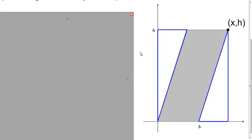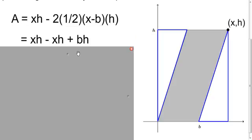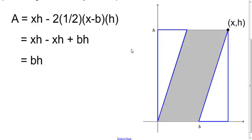So, we put all this together. The rectangle has an area of X times H. And we have two triangles. So, two times the one-half base times height. And the base in this case is X minus B. And so, now we can use the distributive property. And we simplify and get this expression. All right, the two and the one-half cancel out. We distribute the H. And XH minus XH, those cancel as well. So, we're just left with BH, which is the formula that we know for the area of a parallelogram.